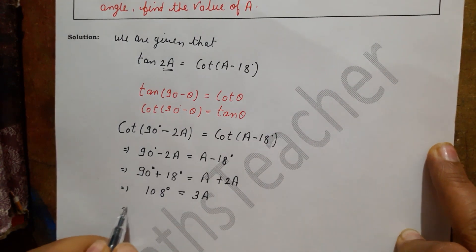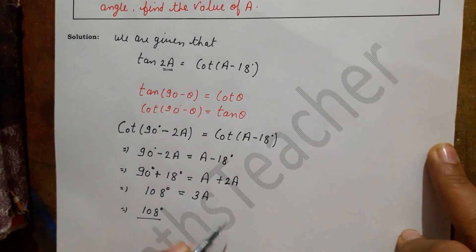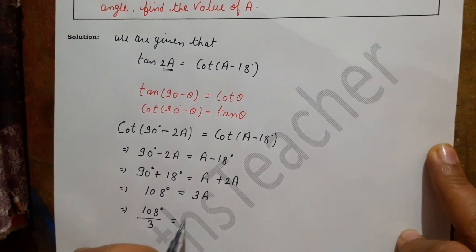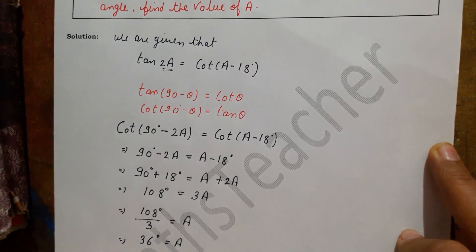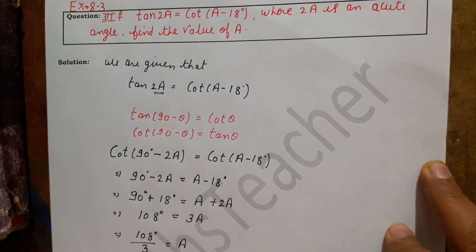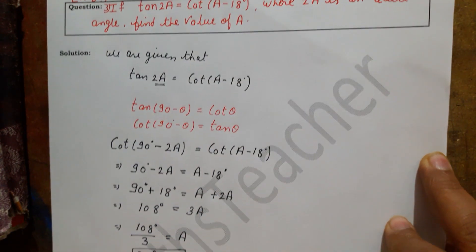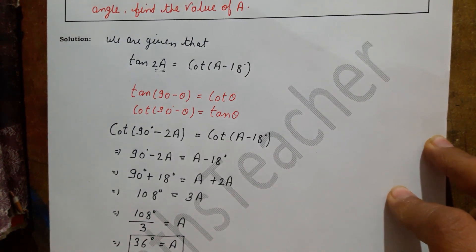So 3A equals 108 degrees. Dividing both sides by 3, we get A equals 36 degrees. So the value of A is 36 degrees. I hope you understood. Please like, subscribe, and press the bell icon. Thank you.